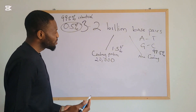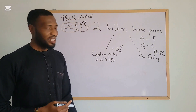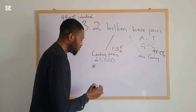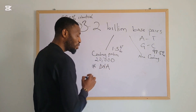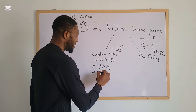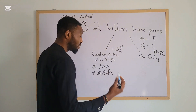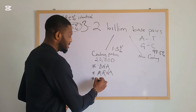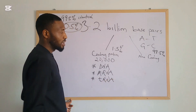Let's talk about what the coding portions and non-coding portions of the human genome are. The coding portions of our DNA include parts that code for proteins. We have our mRNA, which is responsible for transcription, and then we have our tRNA, which is responsible for translation.